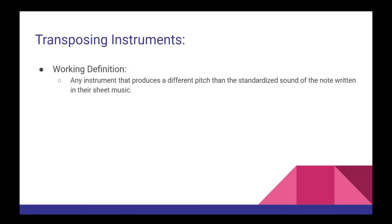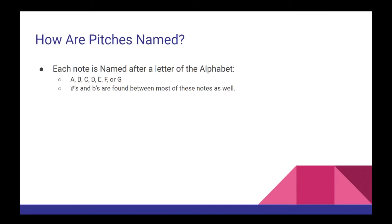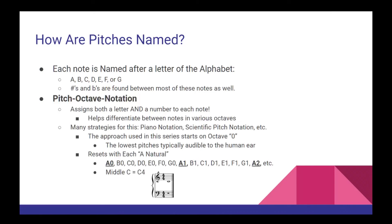Transposing instruments are instruments that produce a different pitch than the one that is written. Before we get into the reasons behind why this is, we first have to address how the pitches are actually named. If you've spent any time studying music theory, you're probably already aware that every note is named after one of the first seven letters of the alphabet — A, B, C, D, E, F, and G. Sharps and flats are used in between most of these notes to denote semitones. As a method for differentiating each pitch even further, the concept of pitch octave notation was introduced. In this approach, each pitch is given both a letter and a number, denoting which octave the note belongs to.